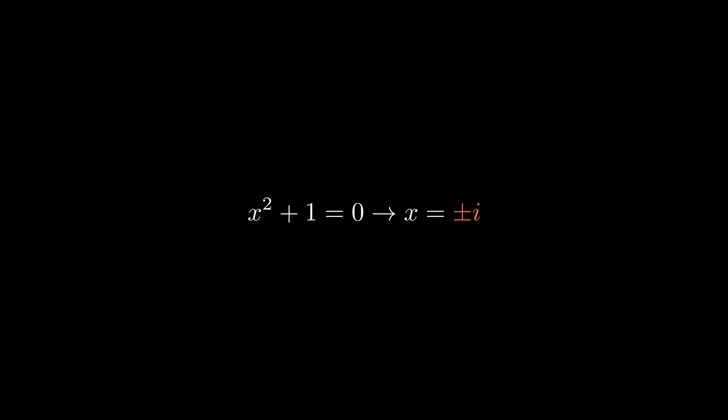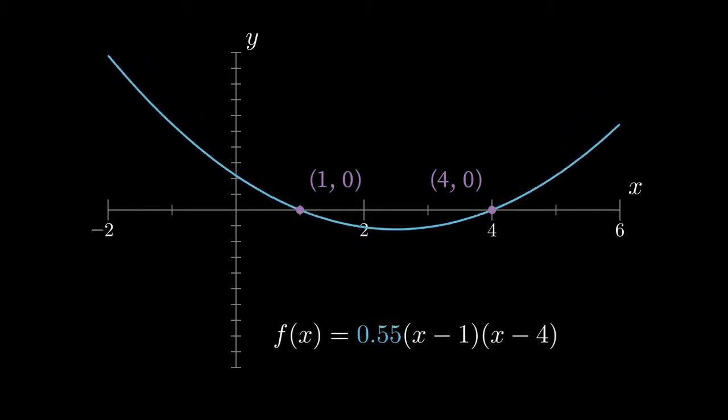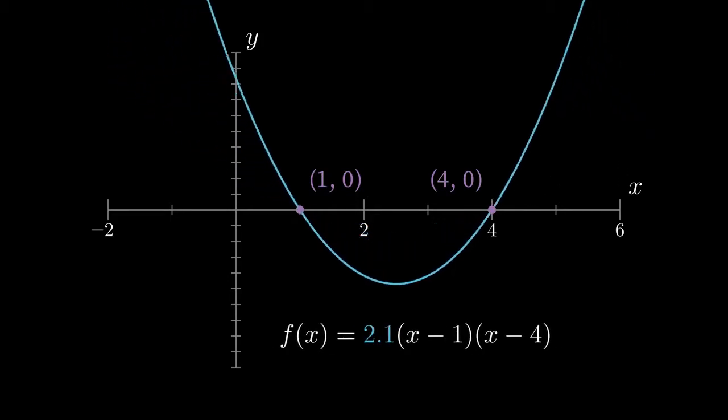We can write the polynomial using the roots by multiplying together one term for each root. When x is 1, x minus 1 becomes 0 and the whole thing returns 0. When x is 4, the same thing happens. Note that there are tons of other quadratics of these two roots. Any scalar multiple doesn't change them.